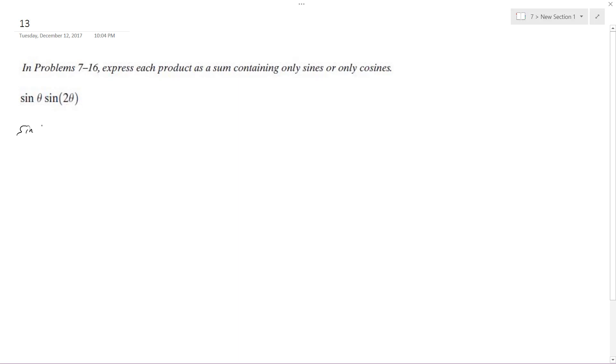So this is in the form sine of alpha sine of beta equals one half of cosine of alpha minus beta minus cosine of alpha plus beta.